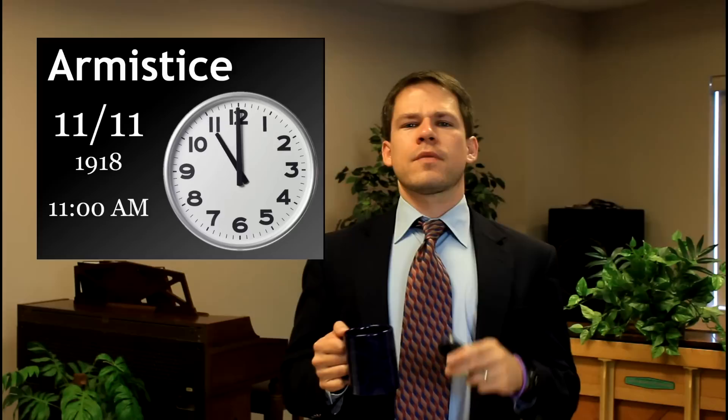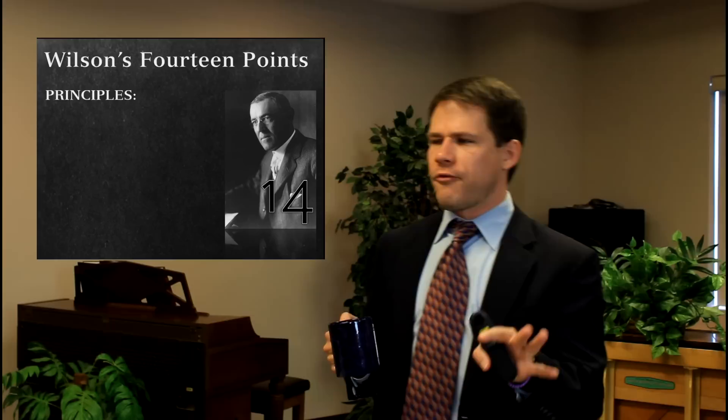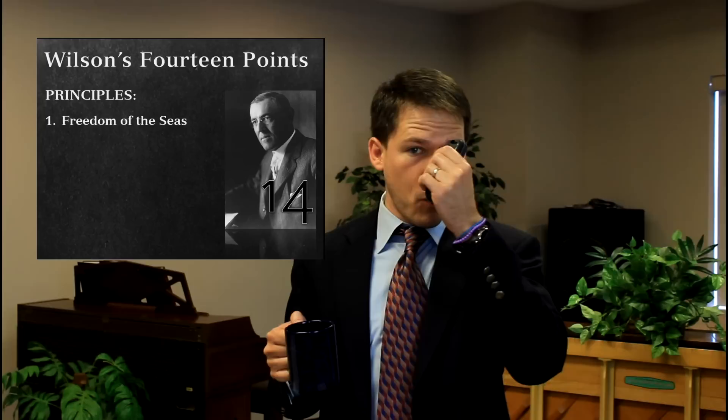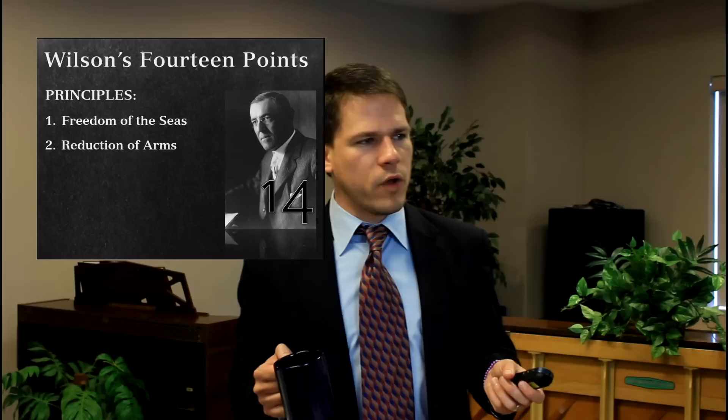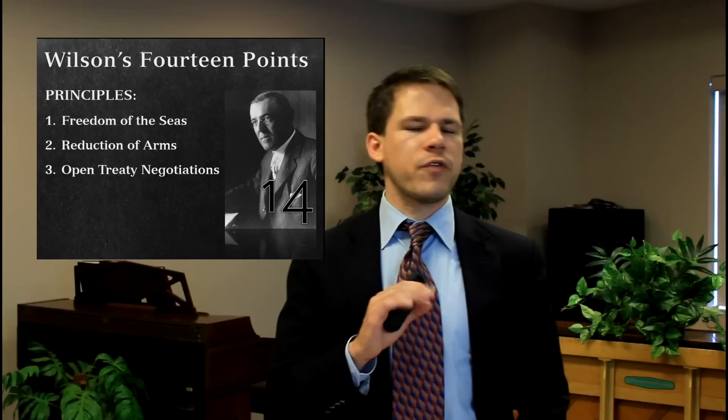Now on to Wilson's 14 points. We're not going to go through all 14, but let's look at five principles. First, freedom of the seas - what we're trying to do is keep a war from happening again, so each of these addresses a cause. Neutral nations such as the United States should be able to use the seas without interference. Second, reduction of arms - the arms race that people were building up before the war needs to be reduced after the war. Third, open treaty negotiations - a lot of secret agreements were made before and during the war, and Wilson says we don't need those.